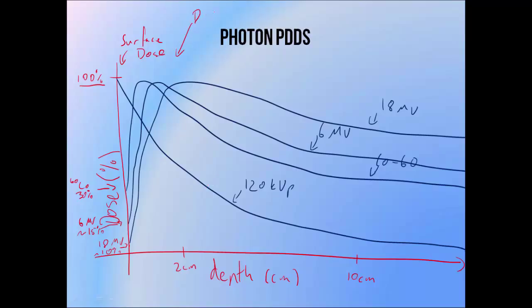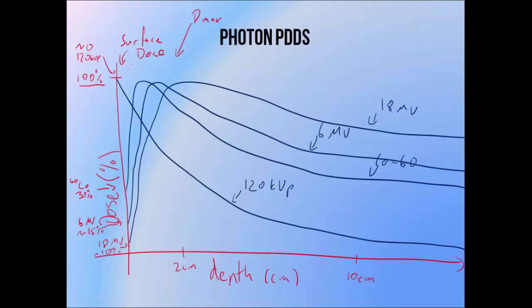The depth of maximum dose, or D-max, tends to increase with beam energy. We tend to class kV beams as having a D-max of 0, depositing maximum dose at the skin surface — though there is a small buildup region in low energy beams too, it's just very small and we don't generally see it on measurements. A cobalt-60 beam has a D-max of around 0.5 cm, 6 MV about 1.5 cm, and 18 MV about 3.3 cm, although there is some normal variation in these values.